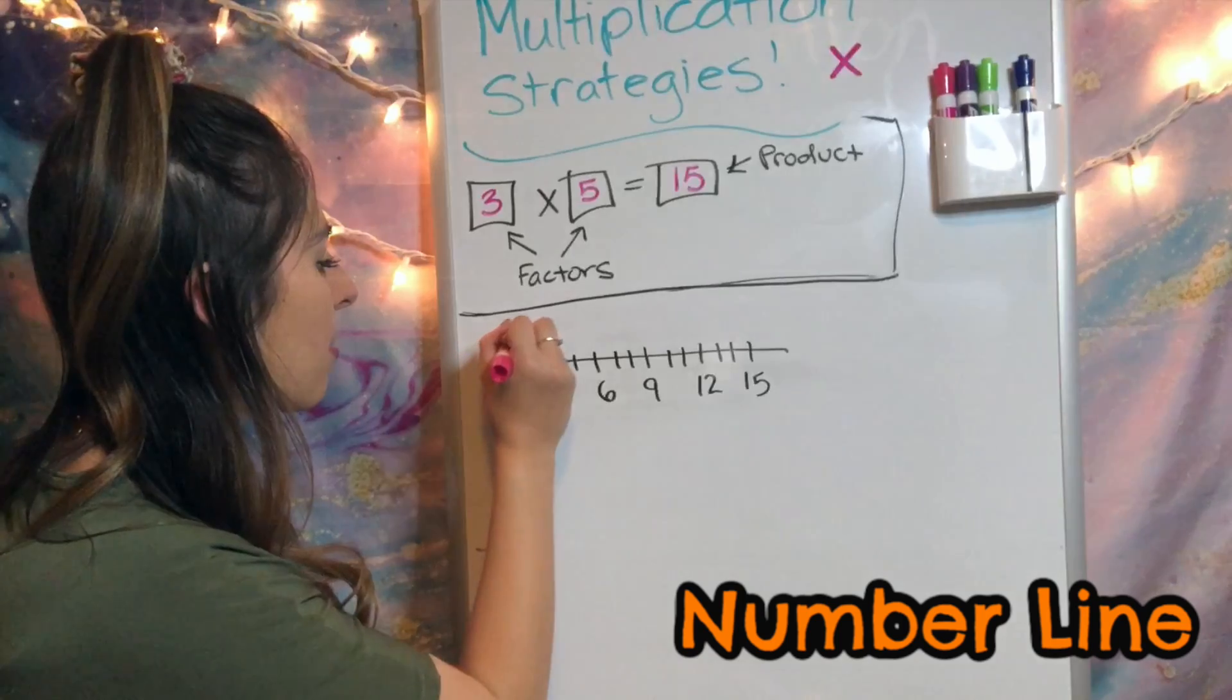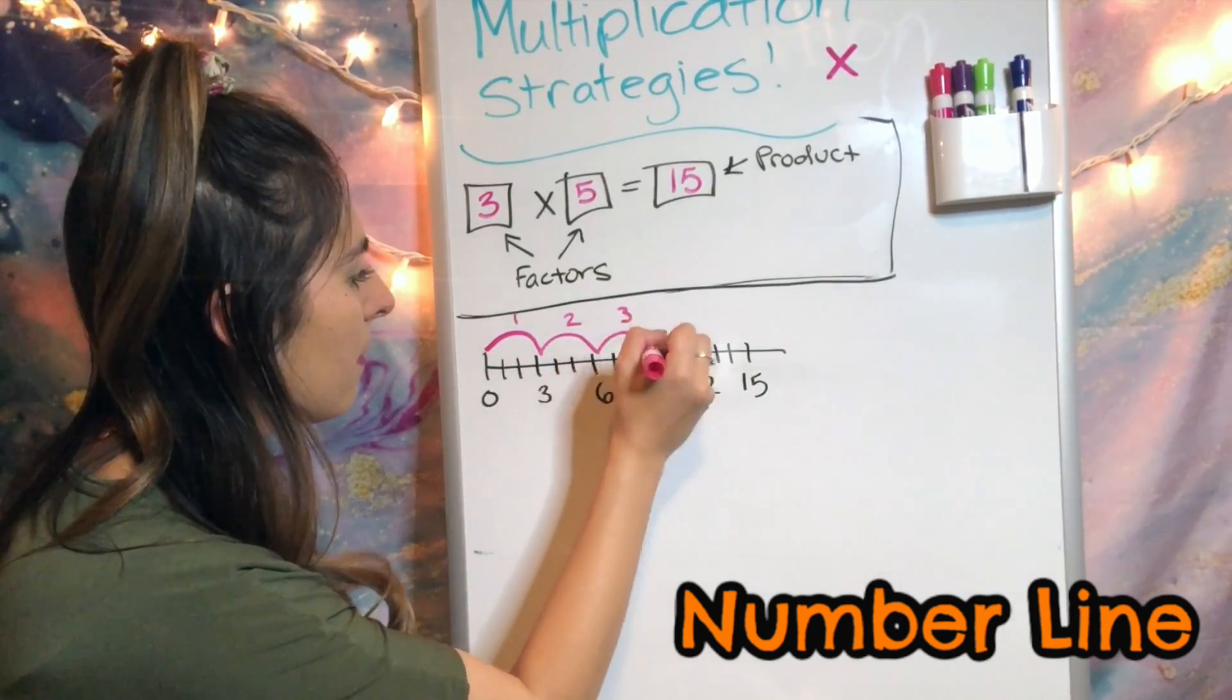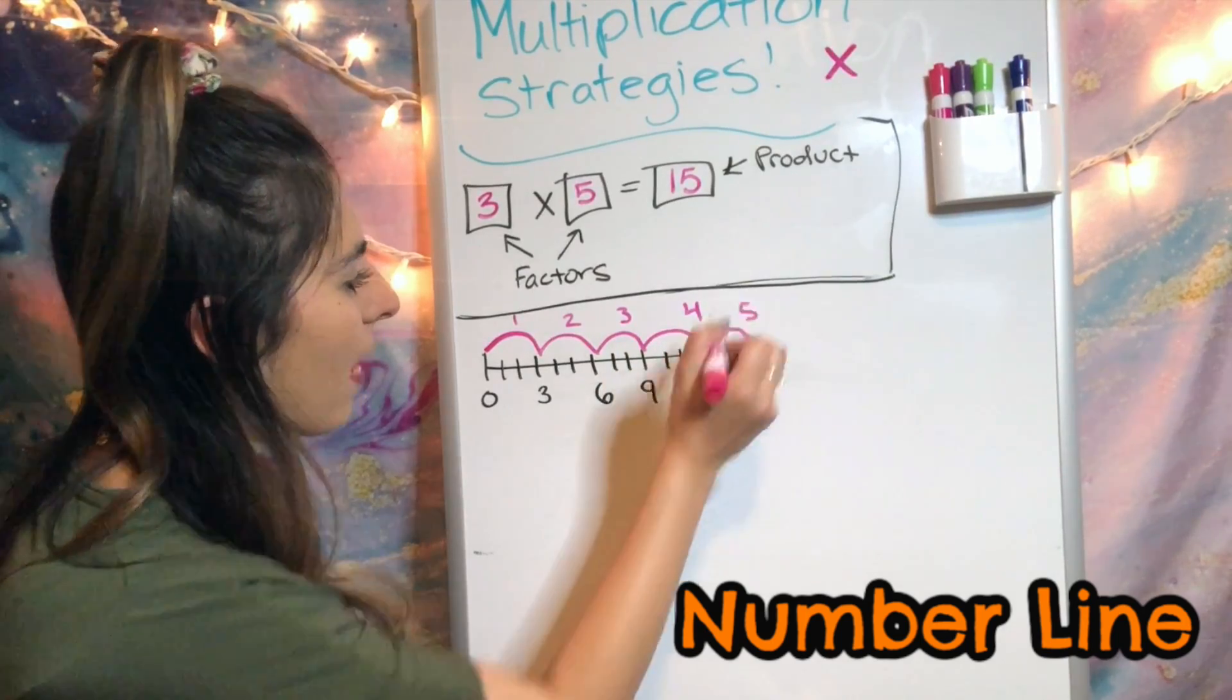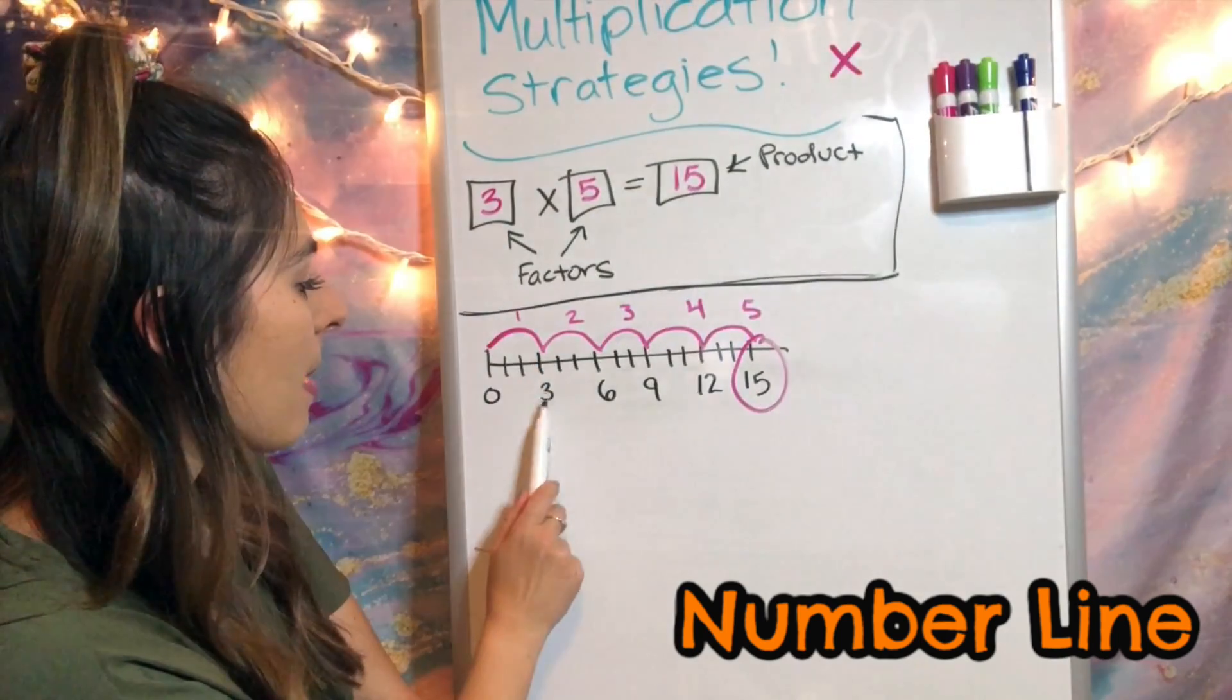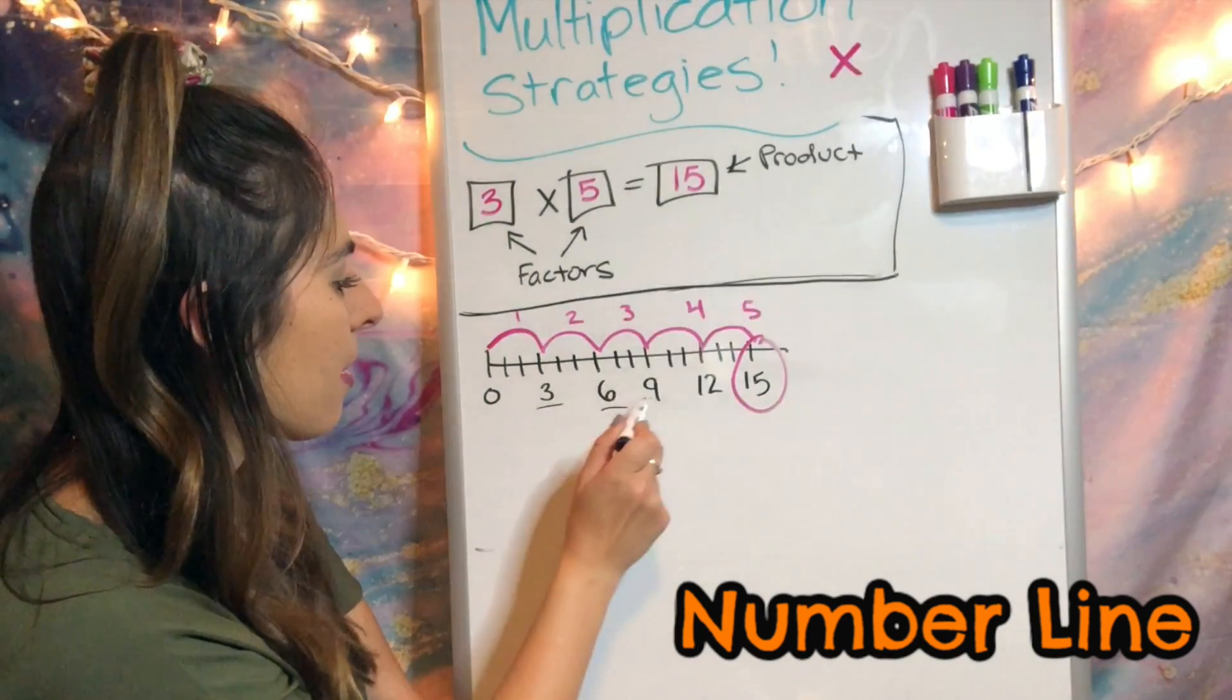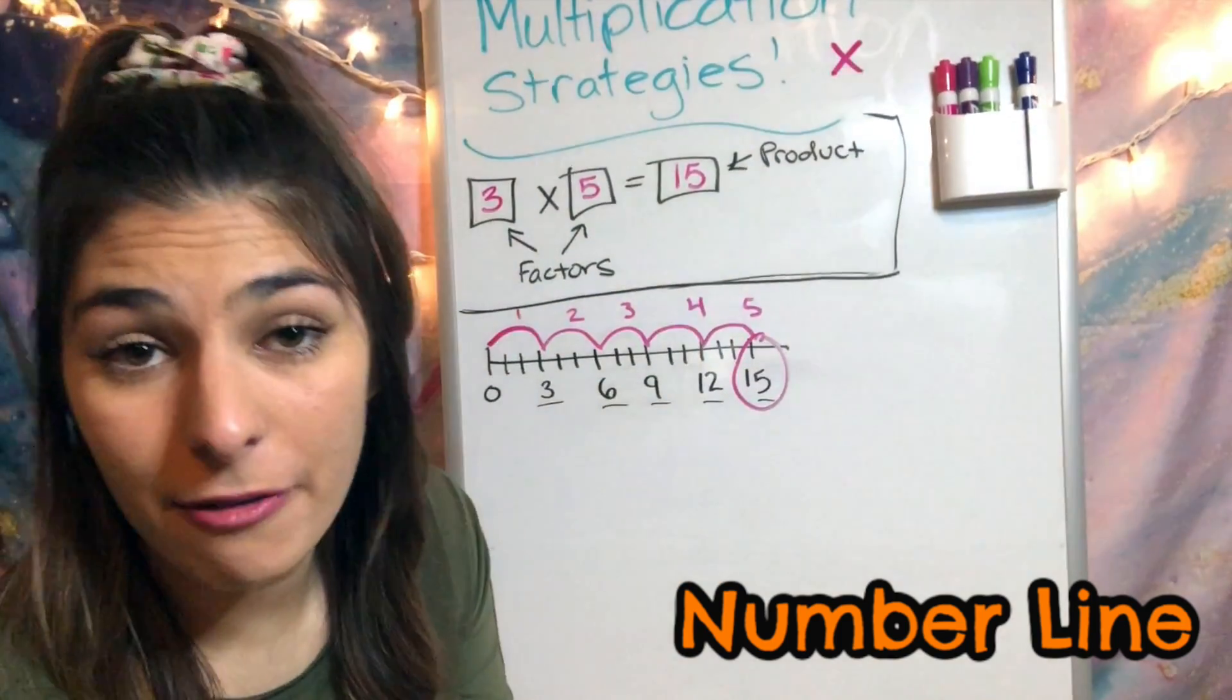Now I need five. So I'm going to say, okay, five. There's one, two, three, four, and five. I landed on 15. My three right here, that's how many I counted. So here's 3, 3, 3, 3, 3. My big hops were that five.